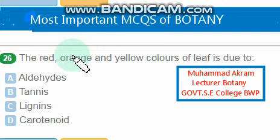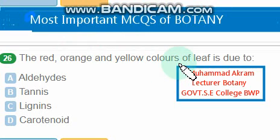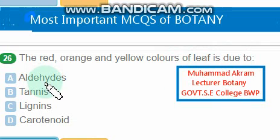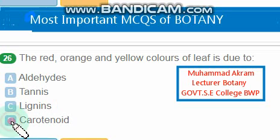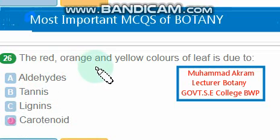The red, orange, and yellow color of a leaf is due to carotenoids — the right option is option D. Carotenoids give red, orange, and yellow colors to leaves.